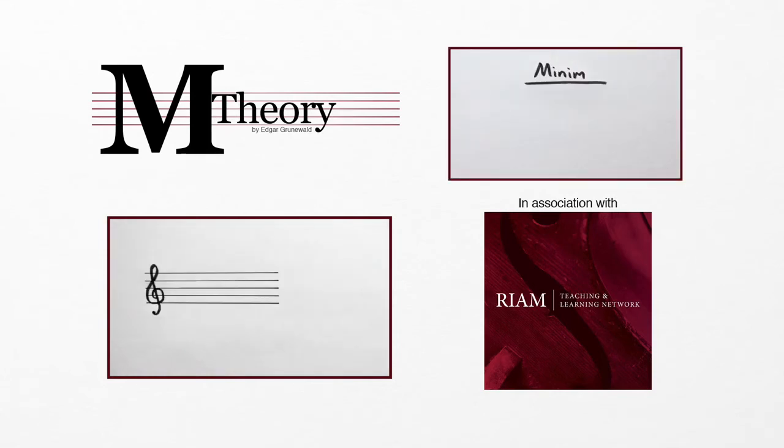To draw a minim, start by drawing another note head, but this time add a stem, a straight line coming out of the side of the note. To draw a crotchet, start by drawing a note head, but this time fill it in, and then add the stem.